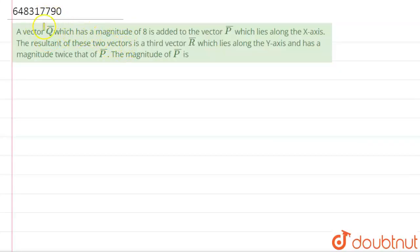Hello students, now we're going to see this question. The question says that vector Q has a magnitude of 8 and is added to vector P which lies along the x-axis. The resultant of these two vectors is the third vector R which lies along the y-axis and has a magnitude twice that of P.